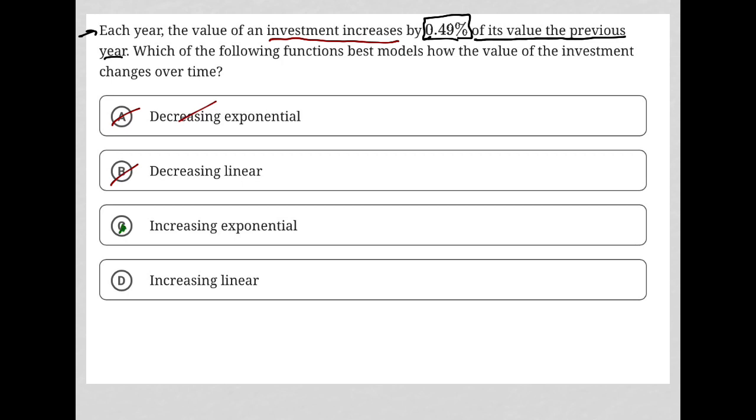And then choice C, which is the correct answer, is that it increases exponentially, right? This is not a linear increase. Again, for the reasons that I mentioned earlier, we're adding this 0.49% to the previous year's value. And that value is going up consistently. So we're going to curve up exponentially.